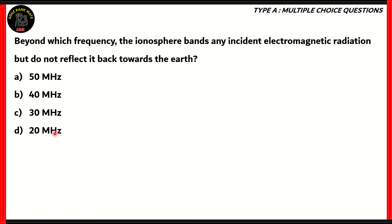So how do we solve this question? The term 'bans any incident electromagnetic radiation' means that the waves reach the ionosphere and then get reflected somewhere else — not back towards Earth. So beyond which frequency does this particular phenomenon happen? Is it 50, 40, 30, or 20?